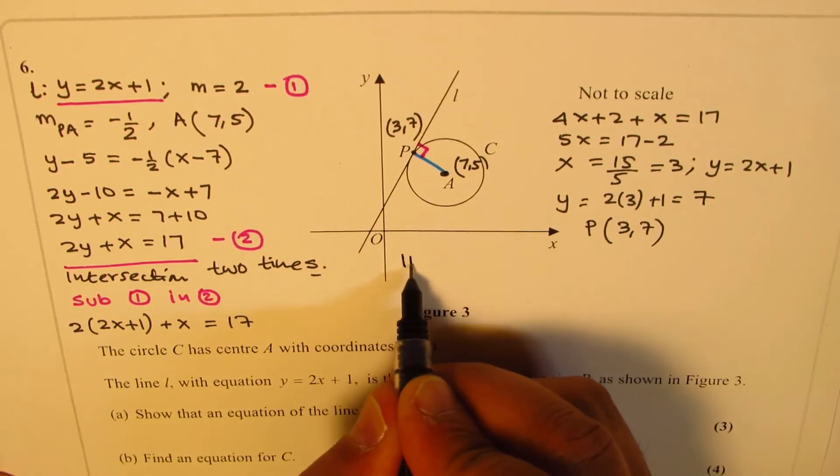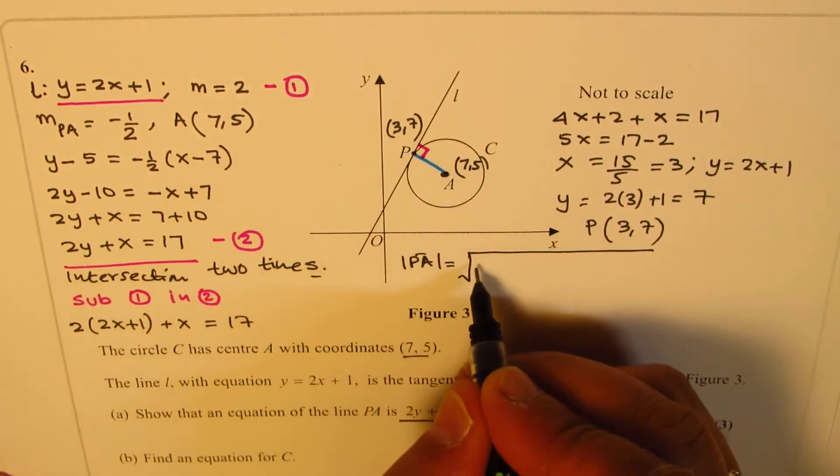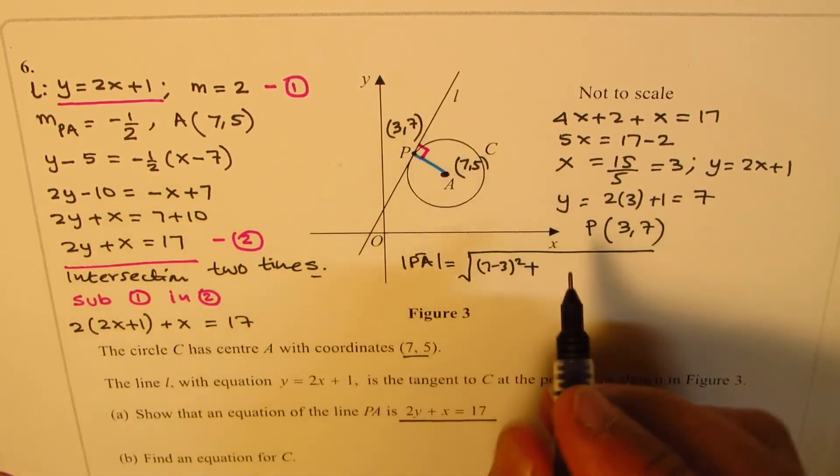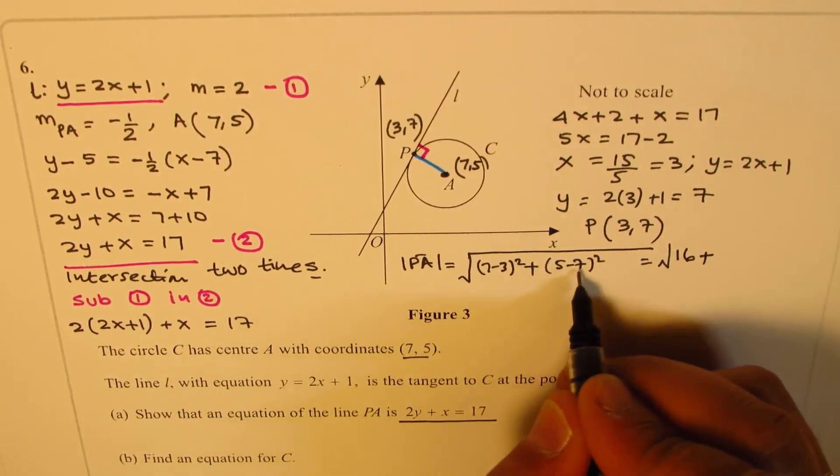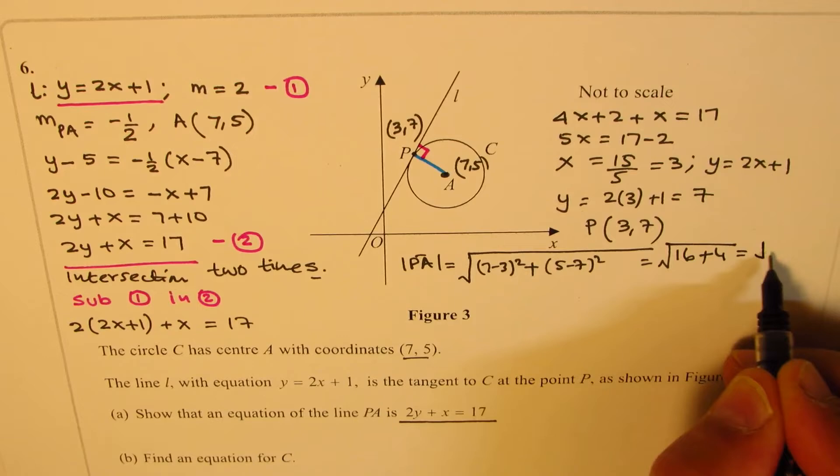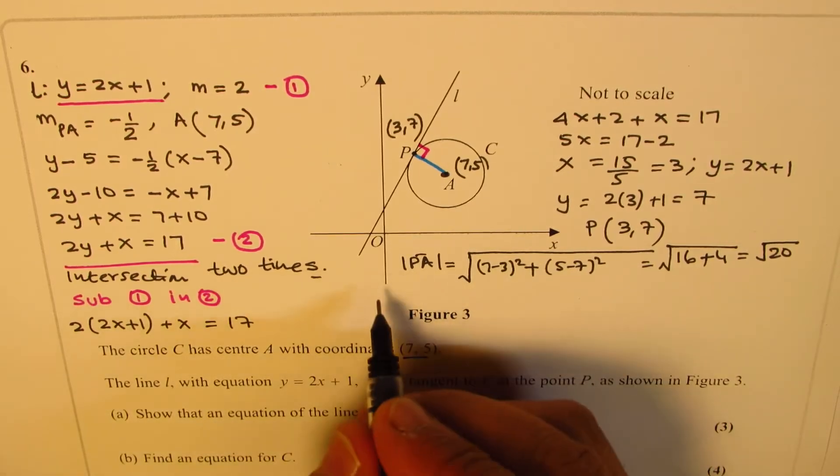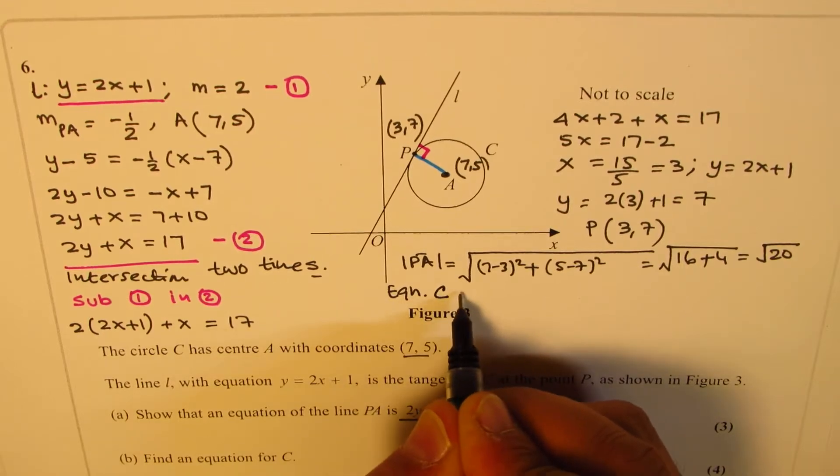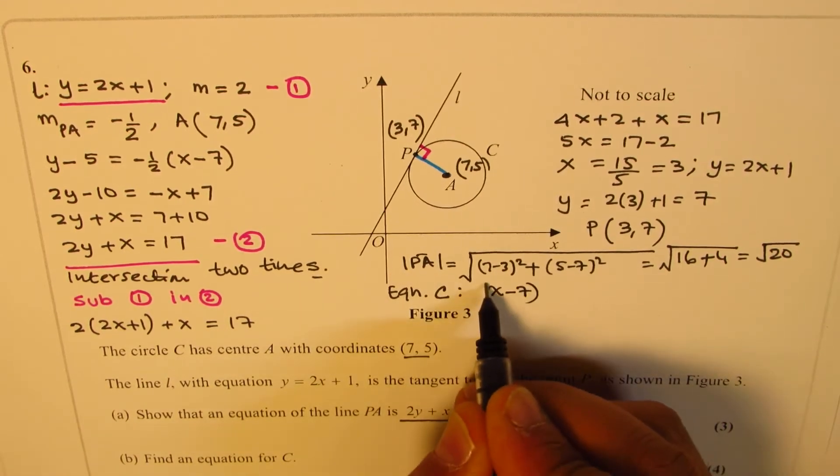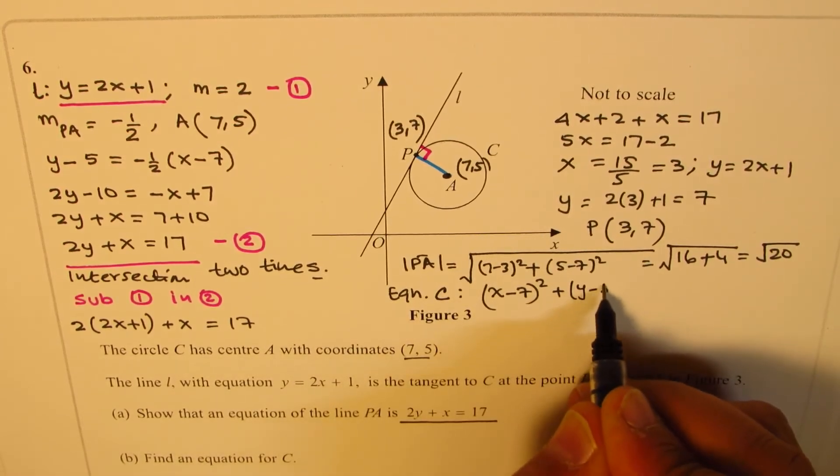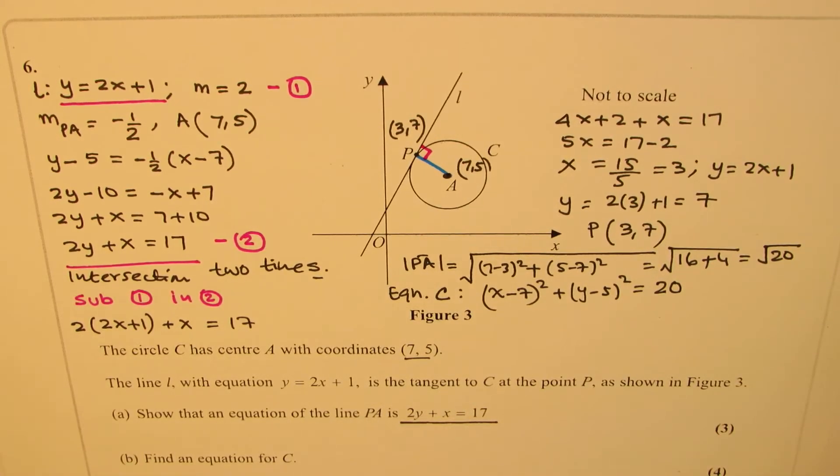The magnitude |PA| will be √[(7-3)² + (5-7)²] = √[4² + (-2)²] = √[16 + 4] = √20. Now we can get the equation of the circle. We know the radius squared, and the center. The equation is (x - 7)² + (y - 5)² = 20.